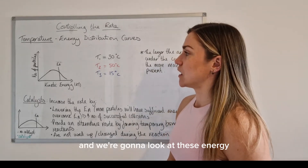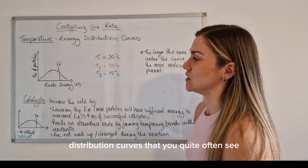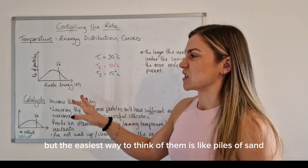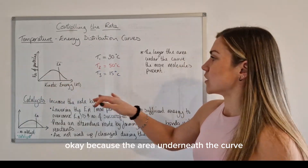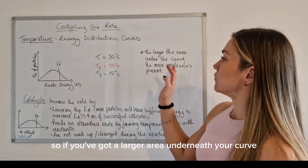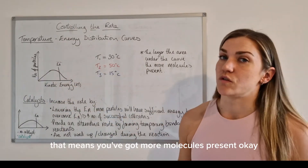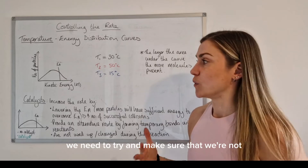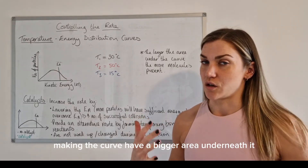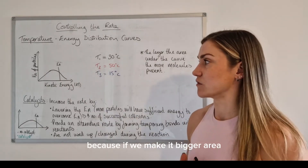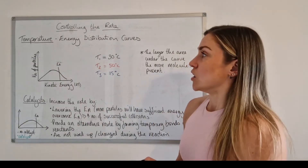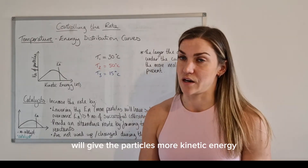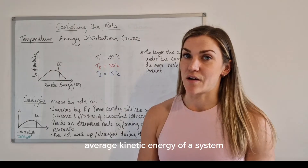Now let's look at kinetic energy distribution curves. These curves can be a bit confusing at first, but the easiest way to think of them is like piles of sand. The area underneath the curve represents how many molecules you have — a larger area means more molecules present. When adjusting curves to show a change in temperature, we need to make sure the area underneath stays the same, because making it bigger would essentially mean adding more particles. Temperature is really just a measure of the average kinetic energy of a system.